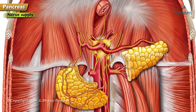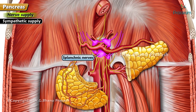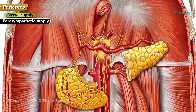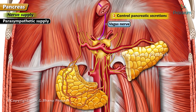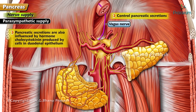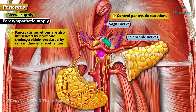Nerve supply: sympathetic supply is from the splanchnic nerves, which are vasomotor. Parasympathetic supply is from the vagus nerve, which controls pancreatic secretions. Pancreatic secretions are also influenced by the hormone cholecystokinin, produced by cells in the duodenal epithelium. Both parasympathetic and sympathetic fibers reach the pancreas by passing along the arteries from the celiac plexus and superior mesenteric plexus.